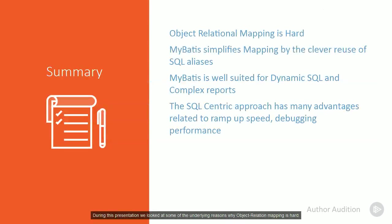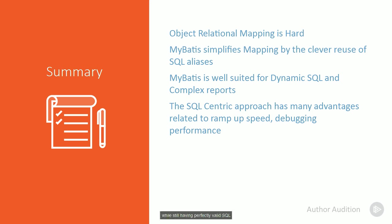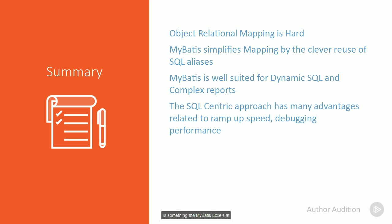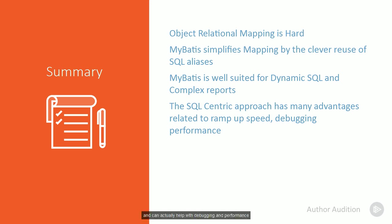During this presentation, we looked at some of the underlying reasons why object-relational mapping is hard. MyBatis's trick of reusing the SQL alias allows you to do a lot of the mapping for free while still having perfectly valid SQL. We saw that building dynamic SQL and delivering pre-existing complex SQL reports is something that MyBatis excels at and is significantly easier than the JPA equivalents. We showed how the SQL-centric approach used by MyBatis makes it easier to get started and can actually help with performance and debugging. We hope you've enjoyed this brief introduction to MyBatis.